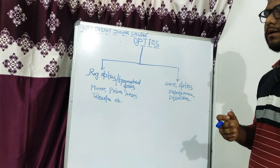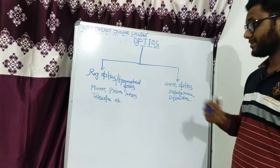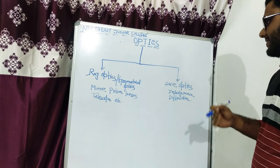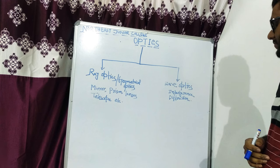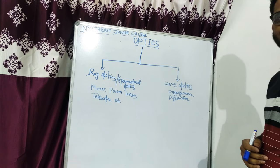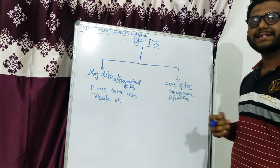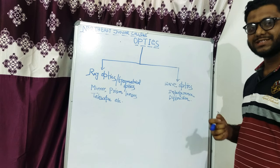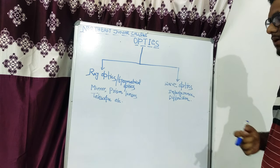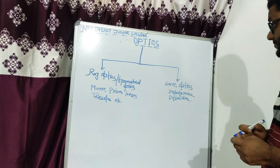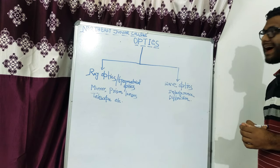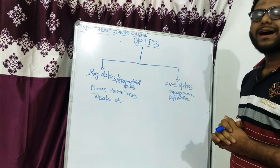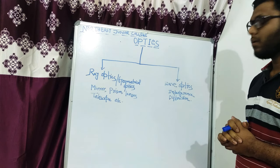In this theory, in the 18th century, Young's double slit experiment was performed by the scientist Young. From this experiment, it could be seen that light behaves as a wave form.